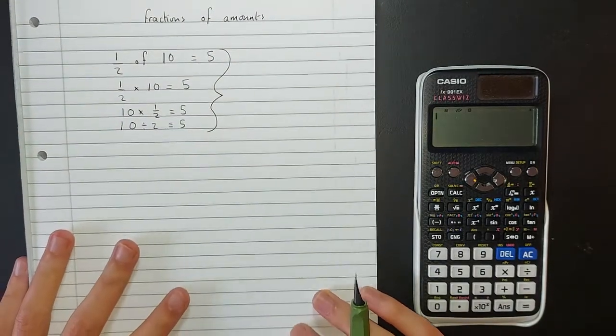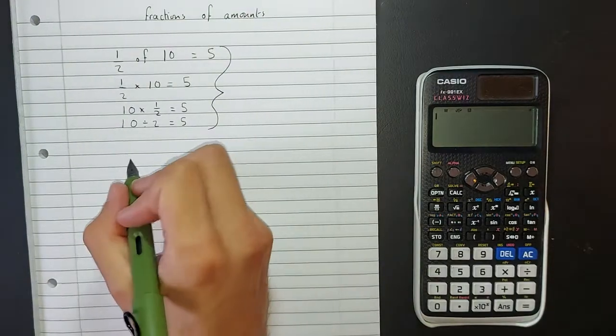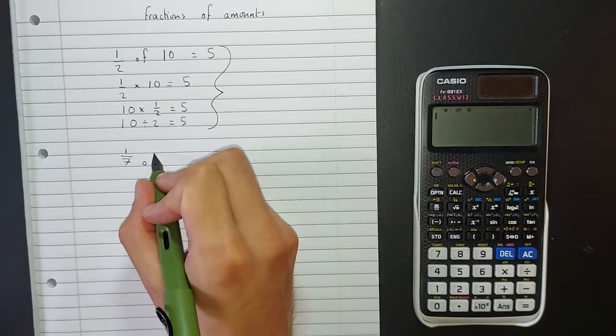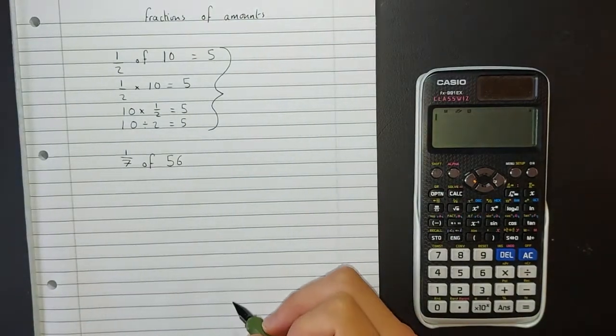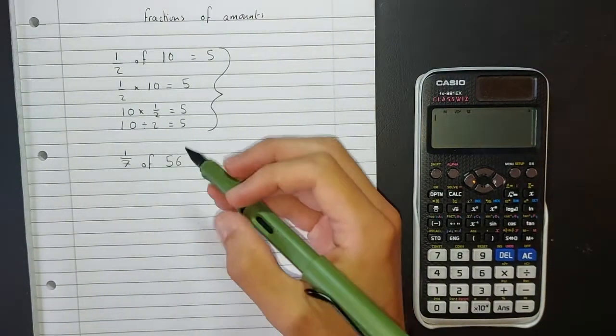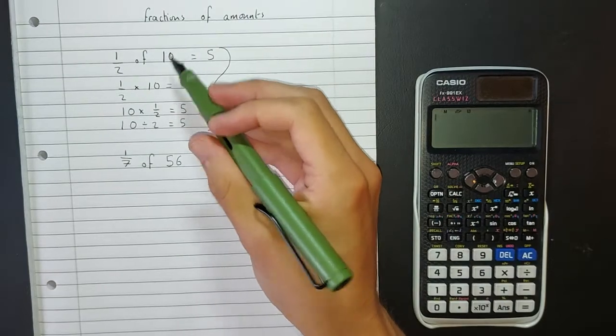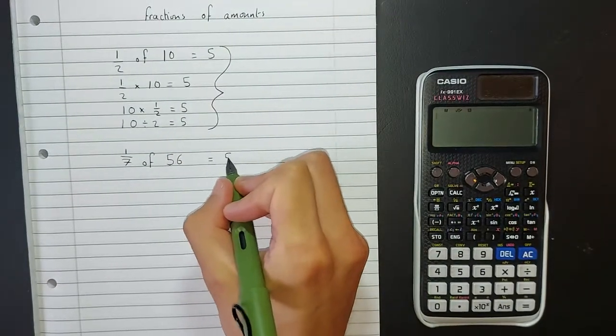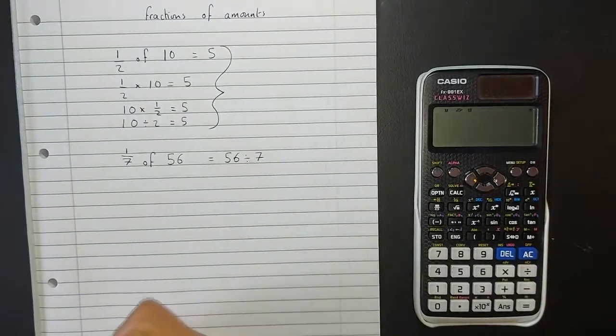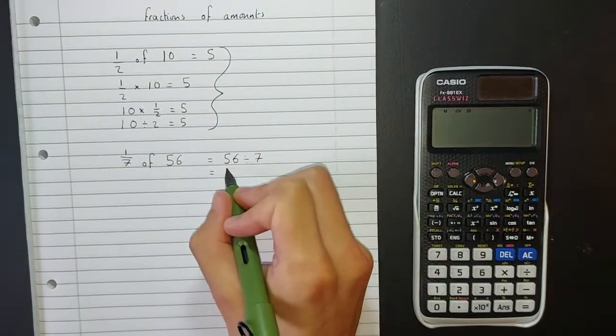If I asked you to find one-seventh of 56, what we're effectively doing, if we think of the link between here and here, is doing 56 divided by seven, which you should be happy with being eight.